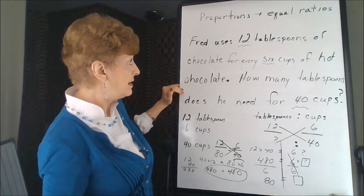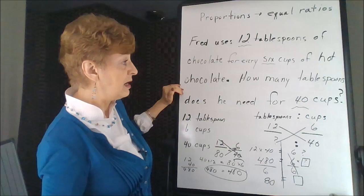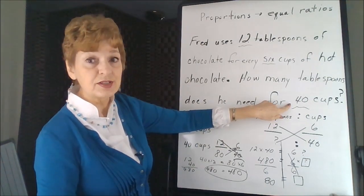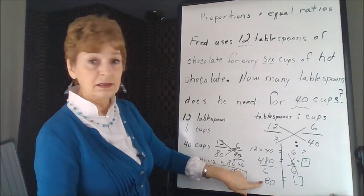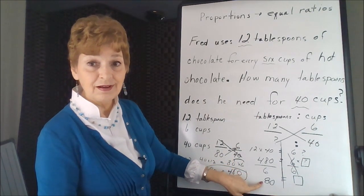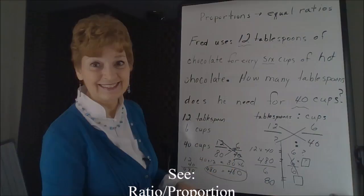So Fred now knows that if he wants to make 40 cups of hot chocolate, he'll need 80 tablespoons of cocoa.